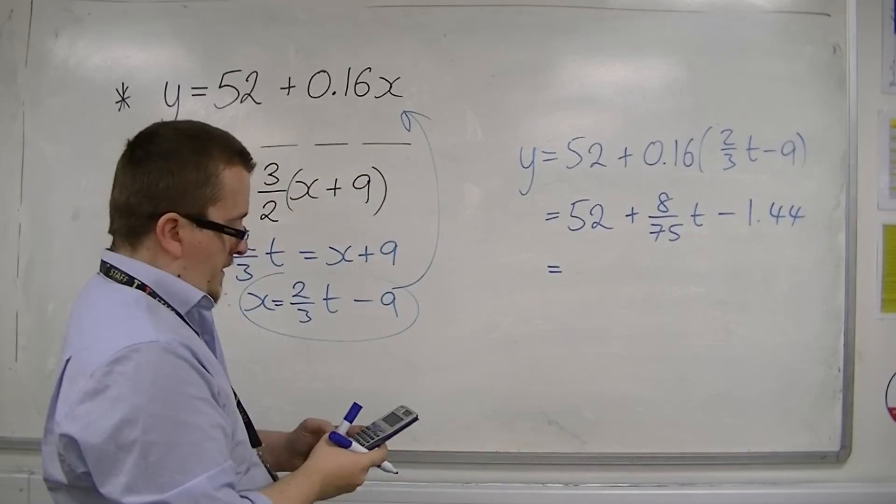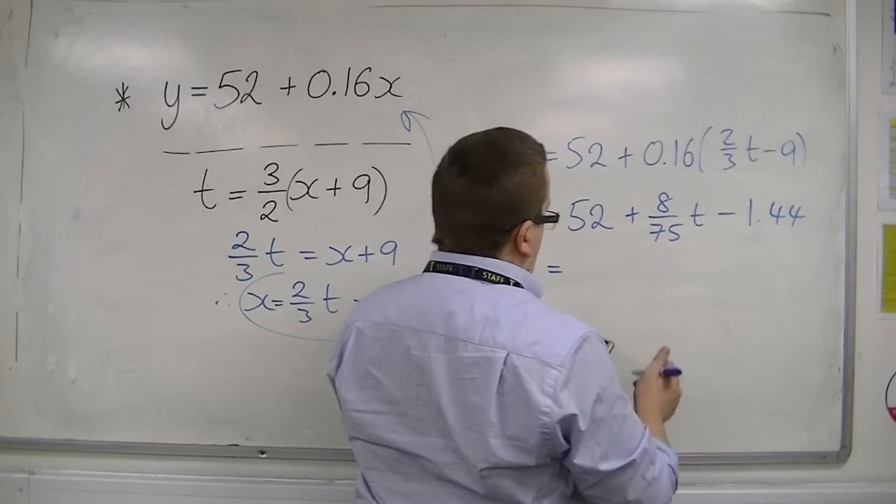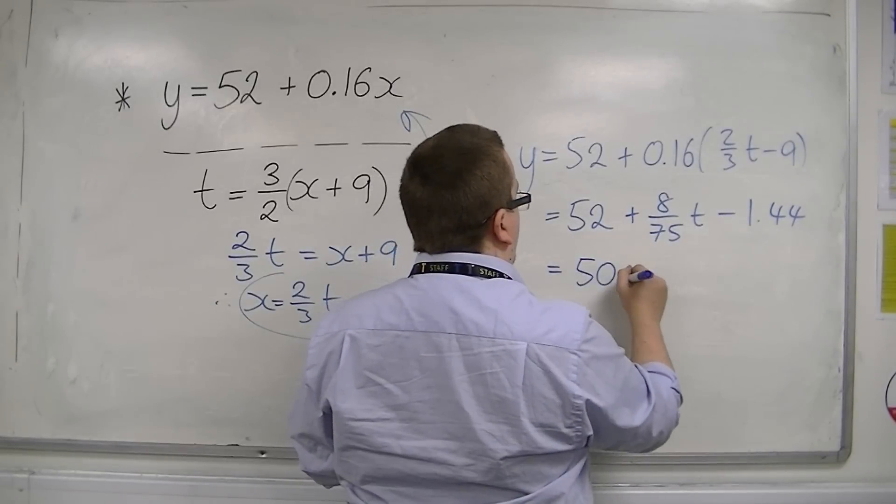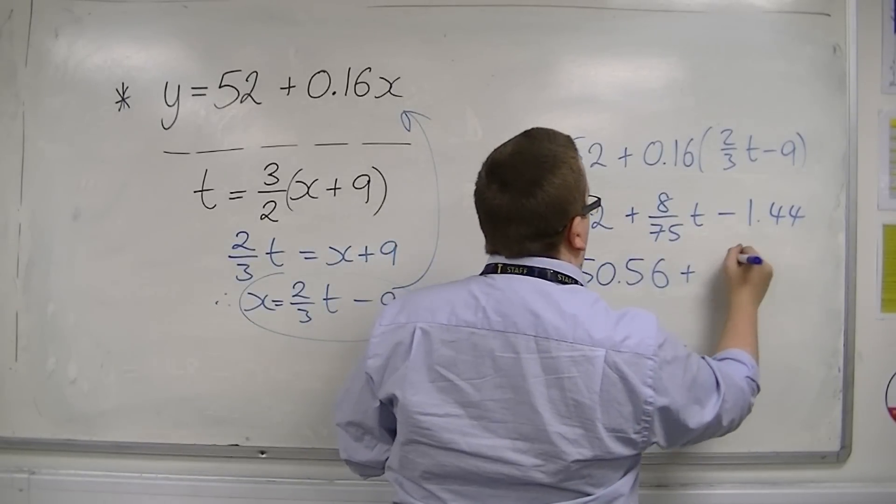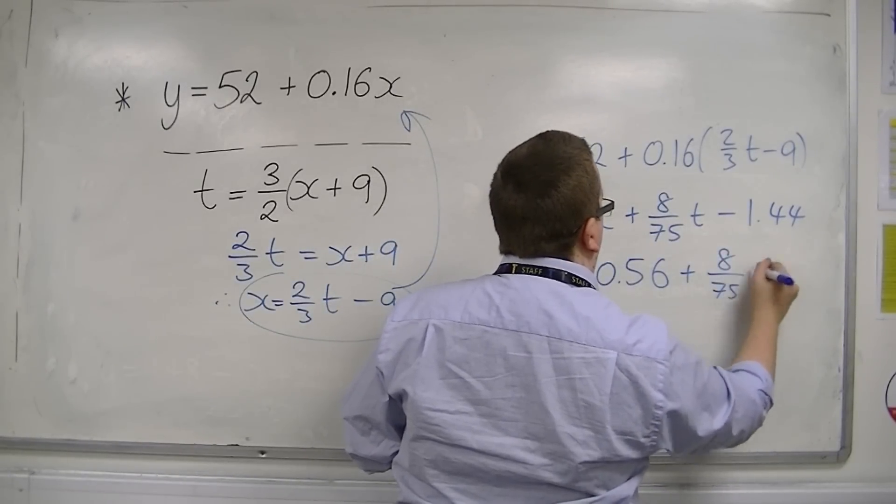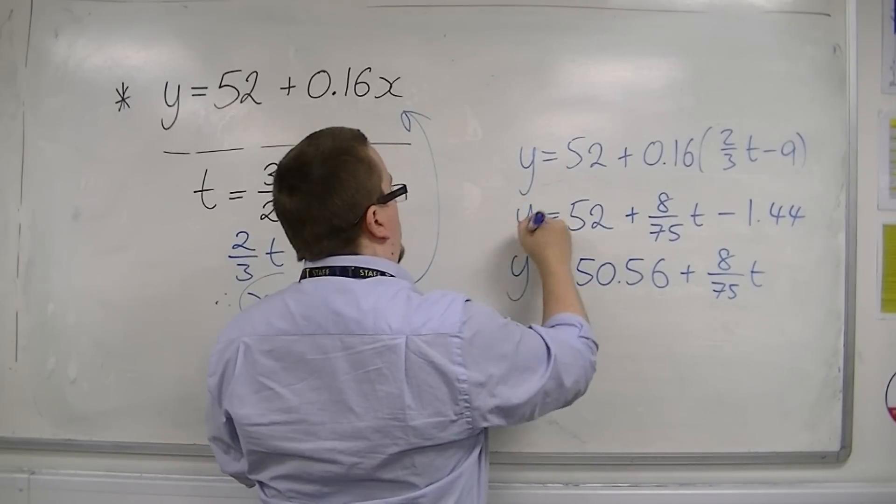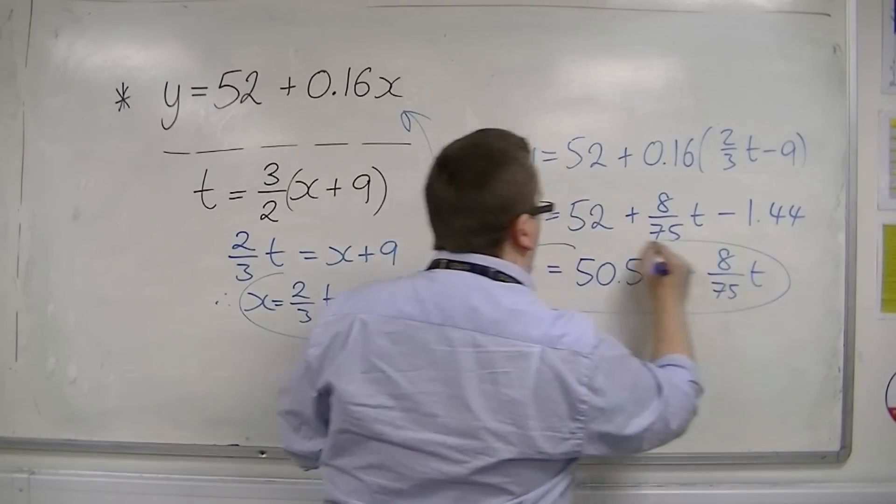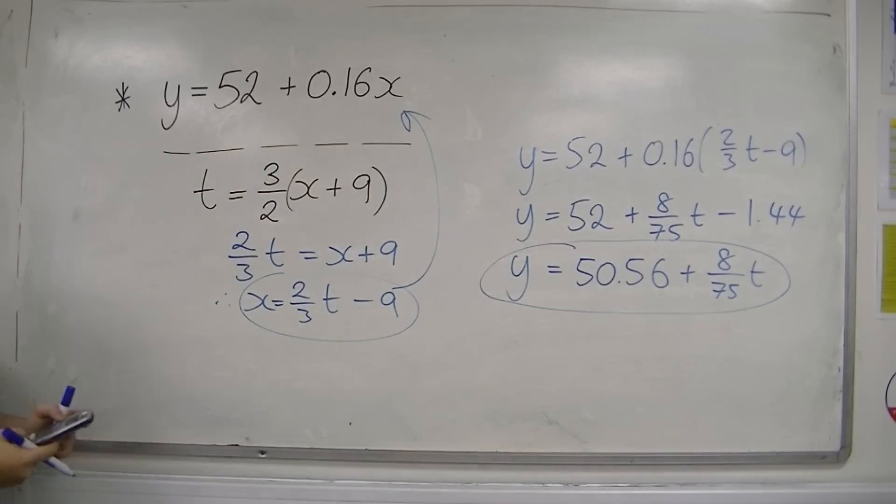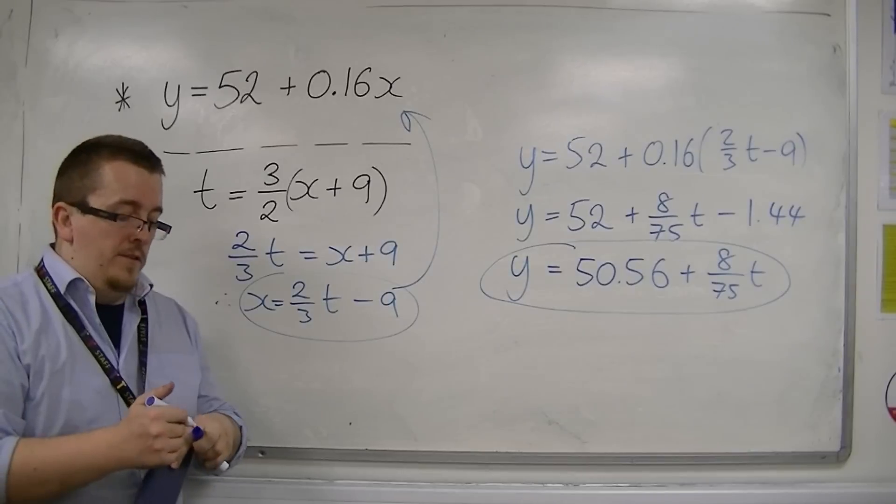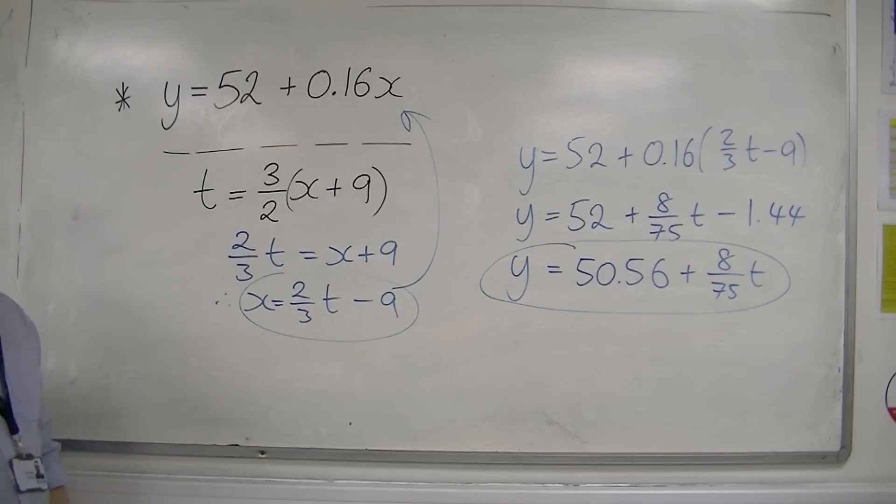So this is the least squares regression line once it has undergone the transformation of going from x to t. And that's how we deal with scaling in these questions.